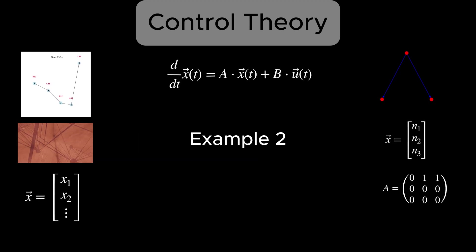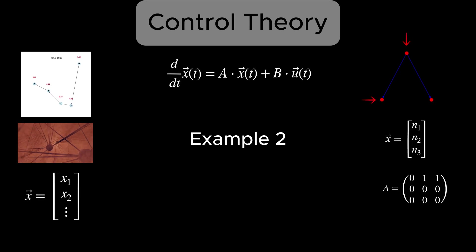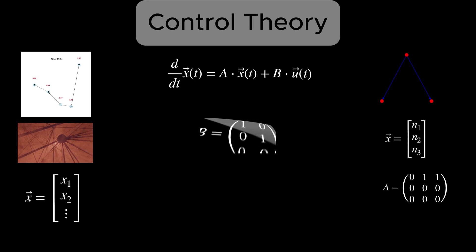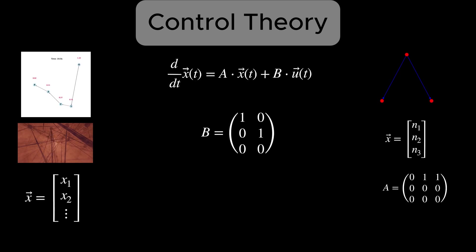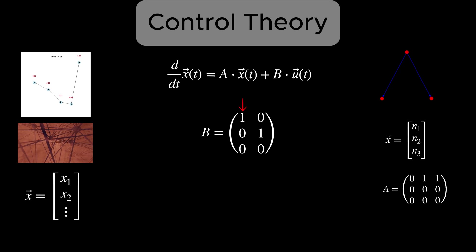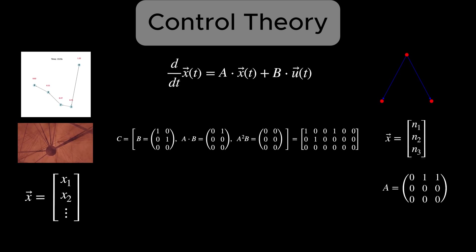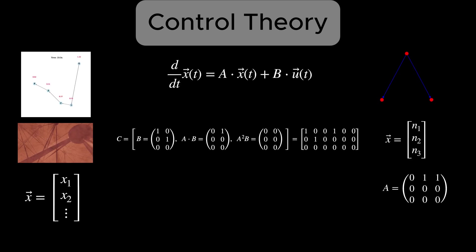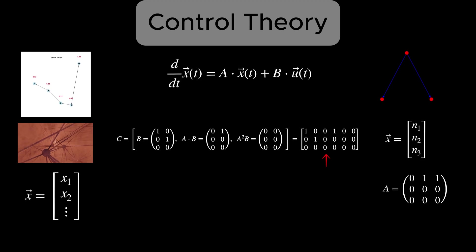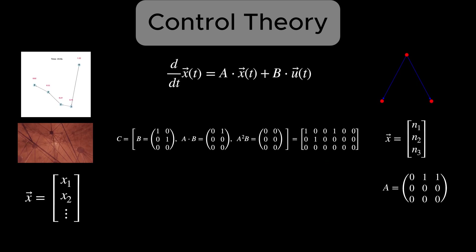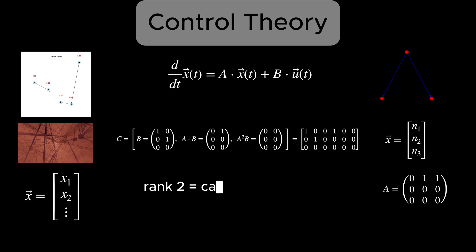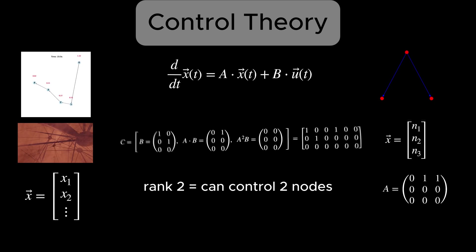Next, let's place two independent inputs. One at node N1 and another at node N2. Then B becomes a 3x2 matrix. Here, the first input affects N1 and the second input affects N2. Again, we compute the columns of the controllability matrix. Putting everything side by side, the C matrix will look like this. From here, we see that the rank of the C matrix is 2. That means we can independently affect two directions in the state space. So we can control two out of the three nodes.